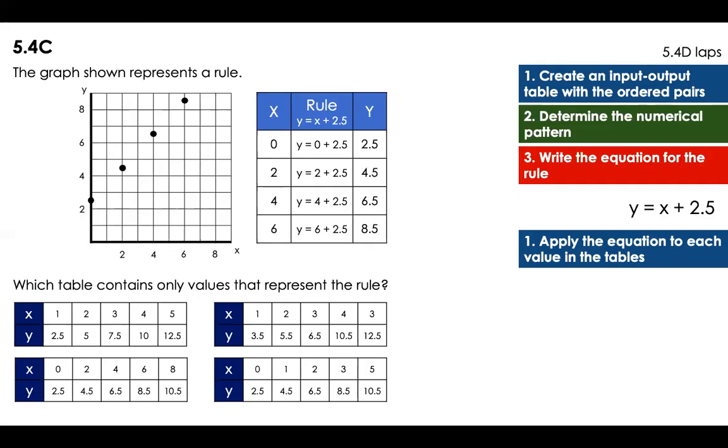Now, I'm going to do the lab of today. Apply the equation to each value in the tables. So let's apply for the first one. 1 plus 2.5 is equal to 3. Does that say 3? No. It says 2.5 in the y. So that one can't be. Next one. 1 plus 2.5 is equal to 3.5? Yes. Let me check the other one.